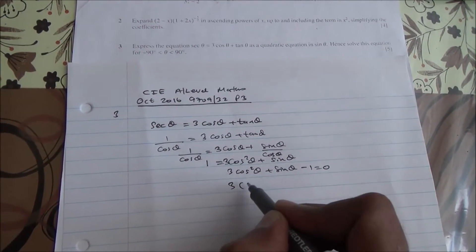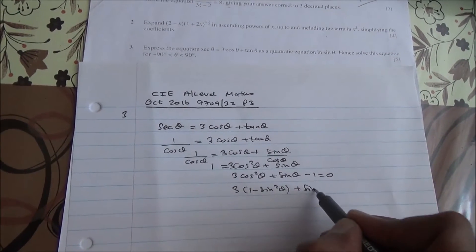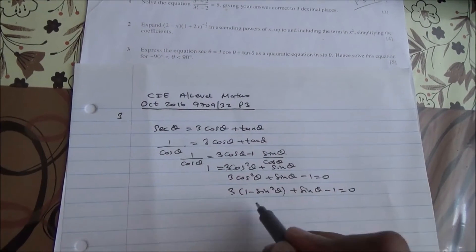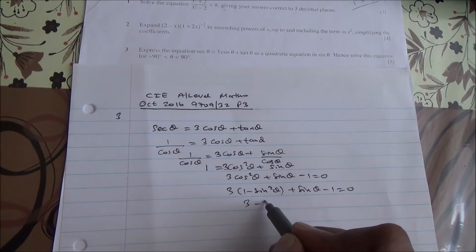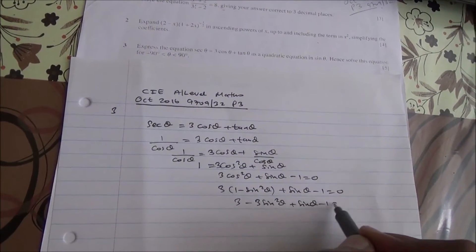What is 3cos²θ? This is 3(1 - sin²θ) using the trig identities. So we have 3 - 3sin²θ + sin θ - 1 = 0.